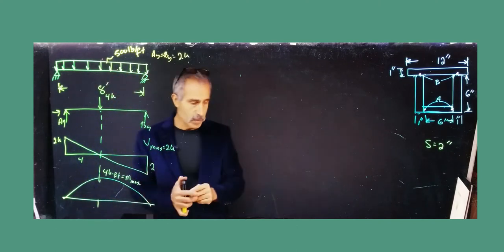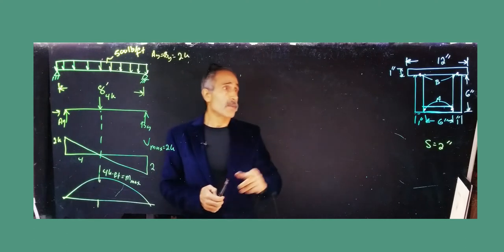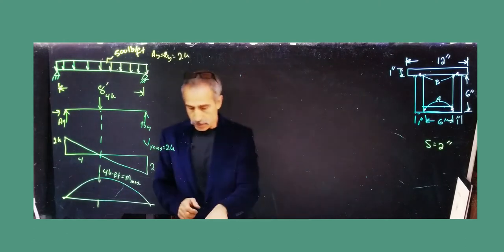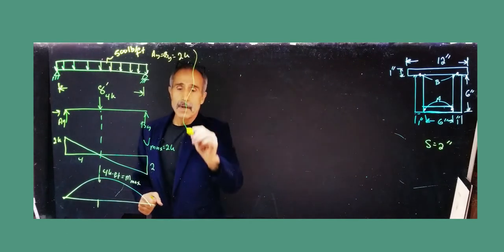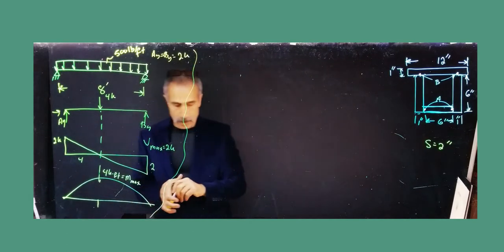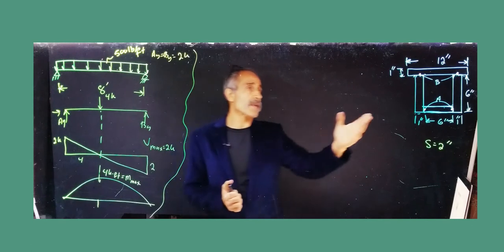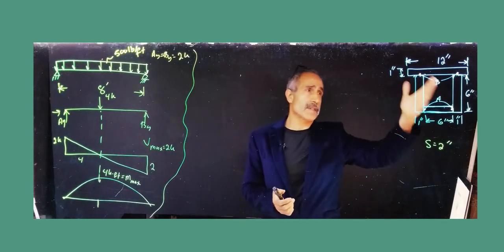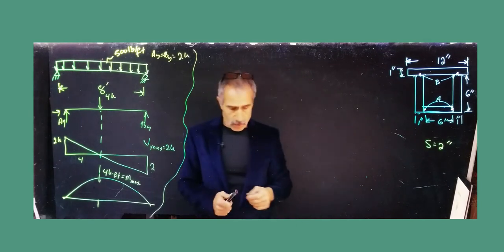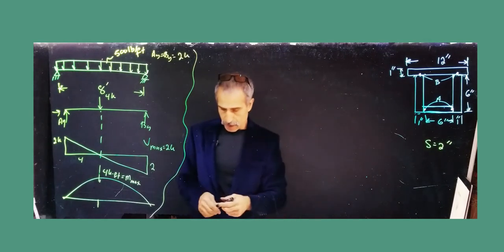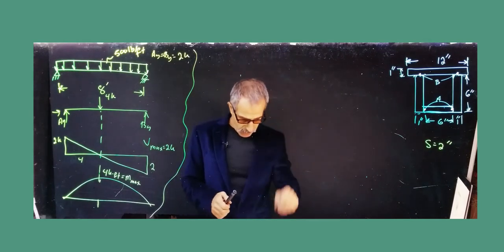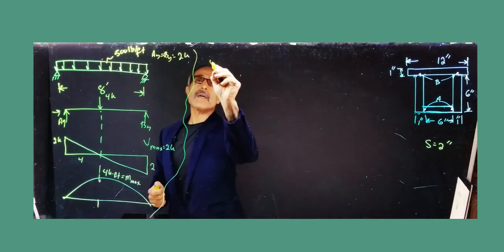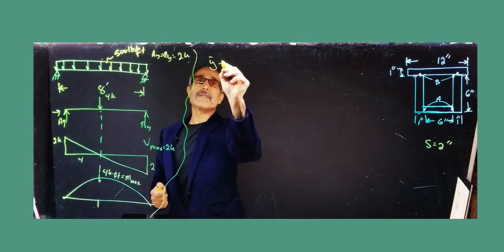I'm going to erase this to make space. Now the first thing I need to do is find the neutral axis. I want to find where the neutral axis is for this irregular shape. The formula is: y-bar equals summation of (y-bar × A) divided by summation of area.